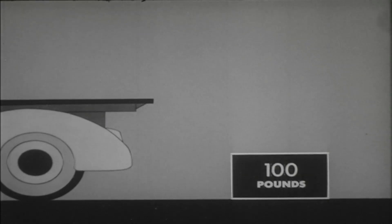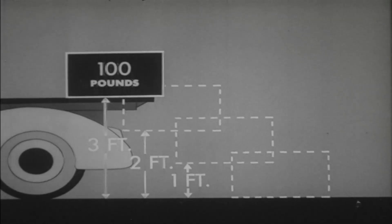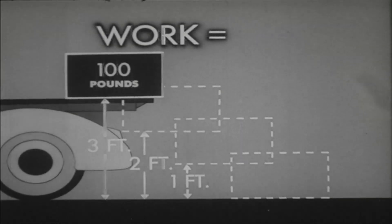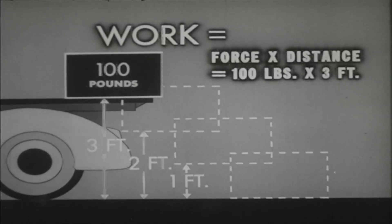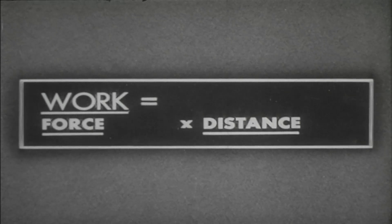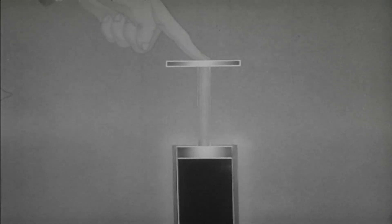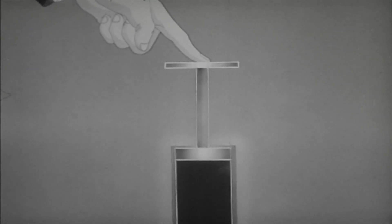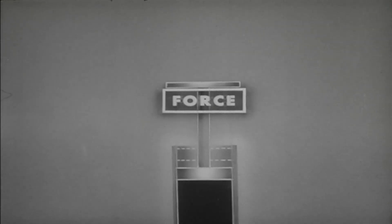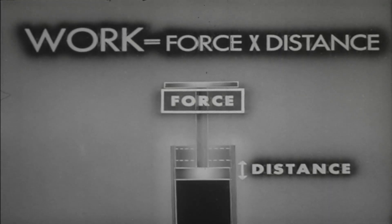In our example of a hundred pound box being lifted onto a truck, we exerted a force of one hundred pounds through a vertical distance of three feet and did three hundred foot pounds of work. Remember the formula for work: force times distance. You will use it often in hydraulics. For smaller distances measured in inches, the work done is expressed in inch pounds. We can see that as force is applied to the piston and the piston moves through a distance, work is being done, and the work done by the piston is the force applied to it times the distance through which it moves.